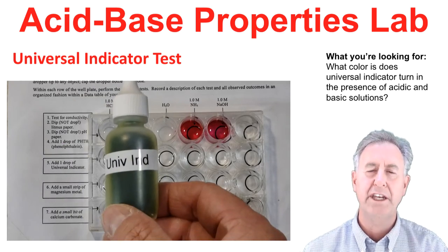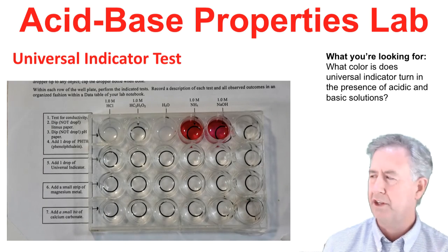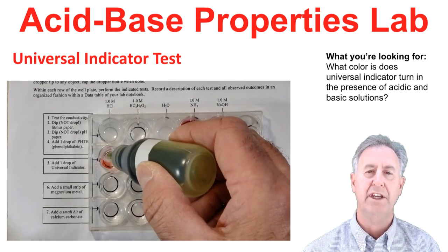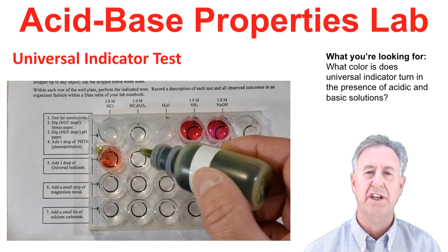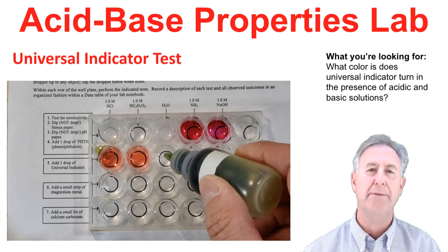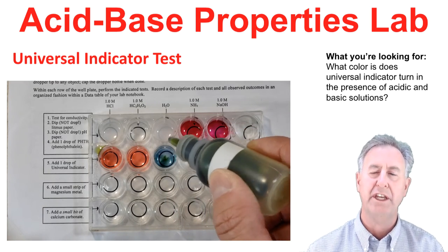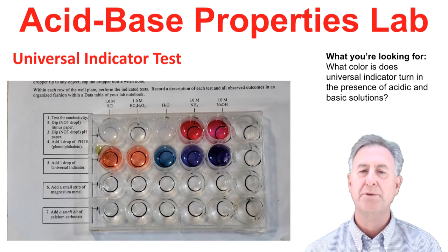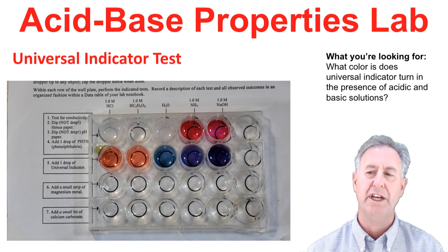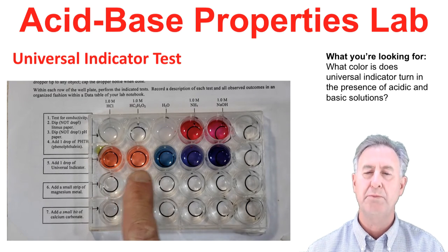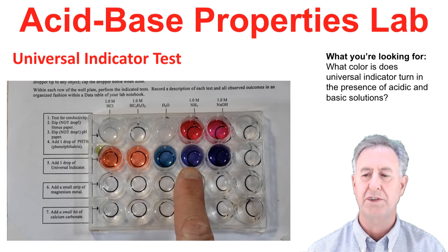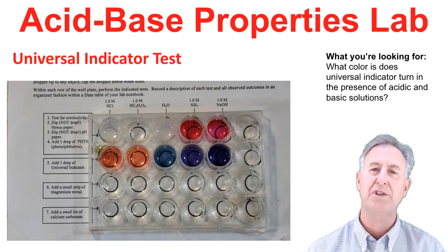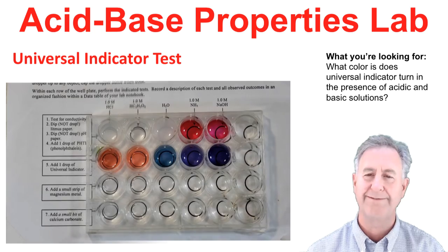Our final indicator test is with universal indicator. Like any indicator, it behaves differently in an acid than in a base. We put a couple of drops in each of our five wells. You'll notice the two basic solutions on the right are purple, and the two acidic solutions on the left are orange. Make observations in your data table.